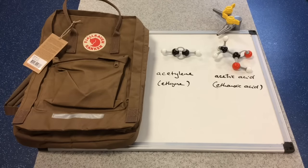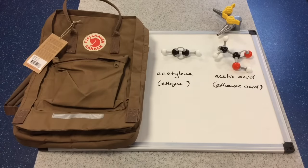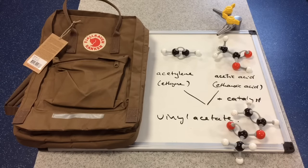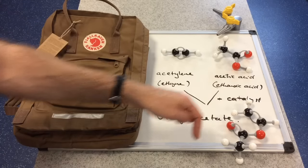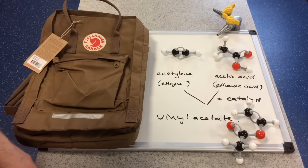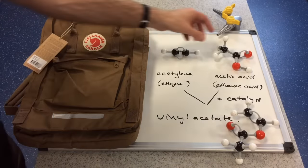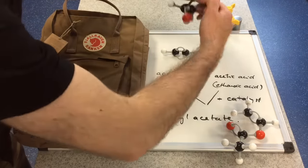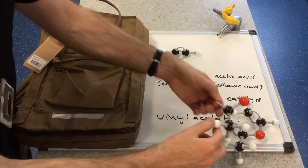So the first part of the process is we need to combine these two molecules together to make something known as vinyl acetate. And that's done by reacting these two molecules together in the presence of a catalyst to form this molecule here. So this is vinyl acetate. So hopefully you can see the acetate group is here. So it looks like we've just pulled that hydrogen off there. There's that group here.